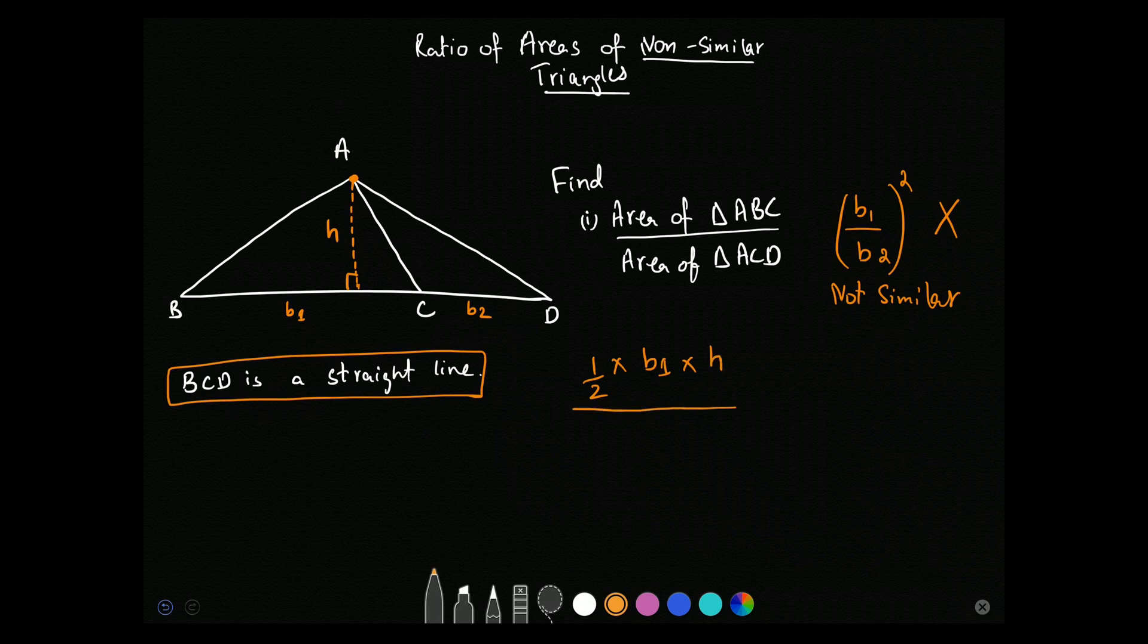This will give us the area of triangle ABC. I will divide this by the area of triangle ACD. It will be half into B2 into h. Now note that half cancels with half and height cancels.